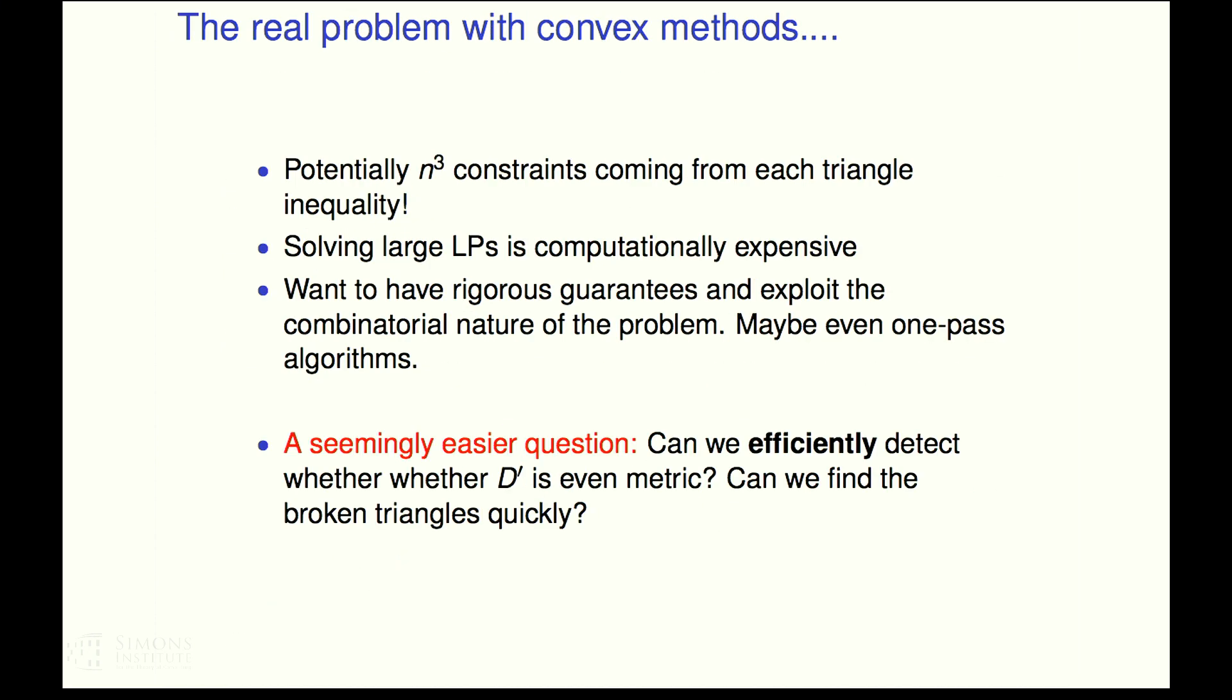Now let's get to some technical stuff. Enough with these experiments. So the real problem with convex methods, possibly a problem, is that there are n cubed constraints that come from each of these triangle inequalities. Solving large LPs is expensive. I'd really want to exploit the combinatorial nature of this problem. I mean, come on. They're triangles.